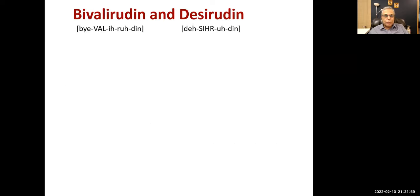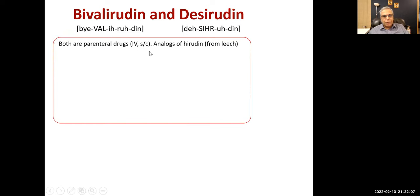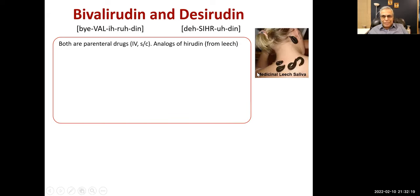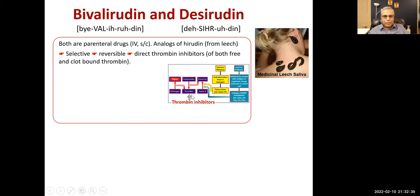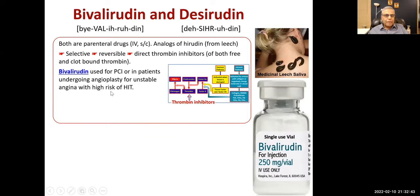Bivalirudine and desirudine are both parenteral drugs given intravenously. They are analogs of hirudin, which comes from the saliva of the leech. They are selective, reversible, direct thrombin inhibitors of both free and clot-bound thrombin. Bivalirudine is used for PCI in patients undergoing angioplasty and for unstable angina with high risk of heparin-induced thrombocytopenia. Half-life is 21 minutes; dose adjustment is required in renal insufficiency.